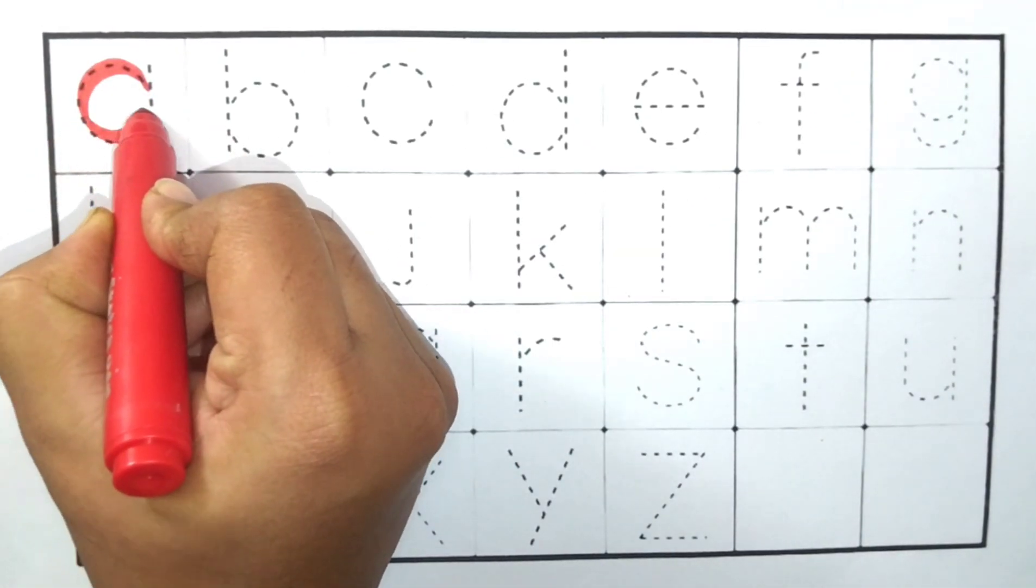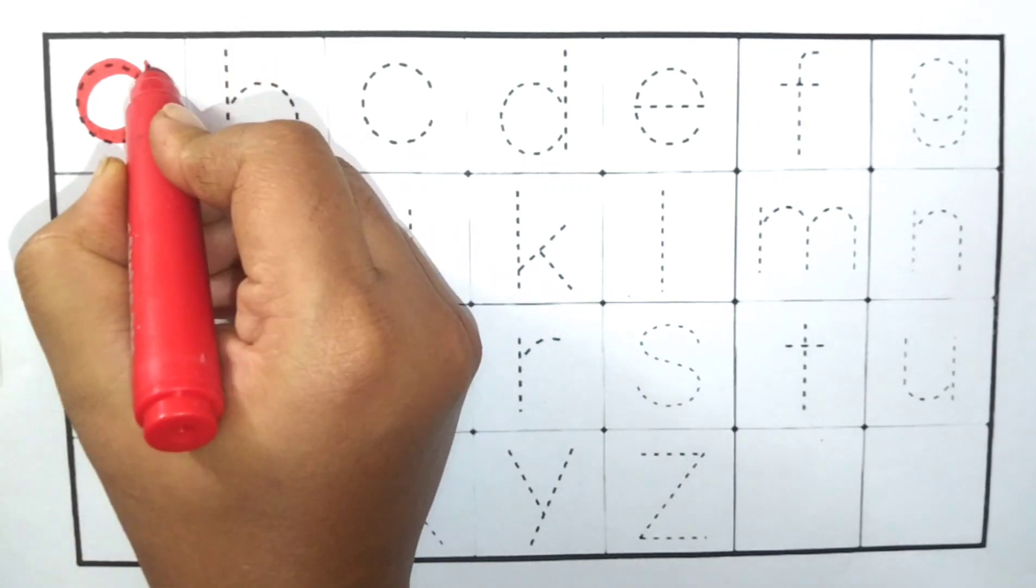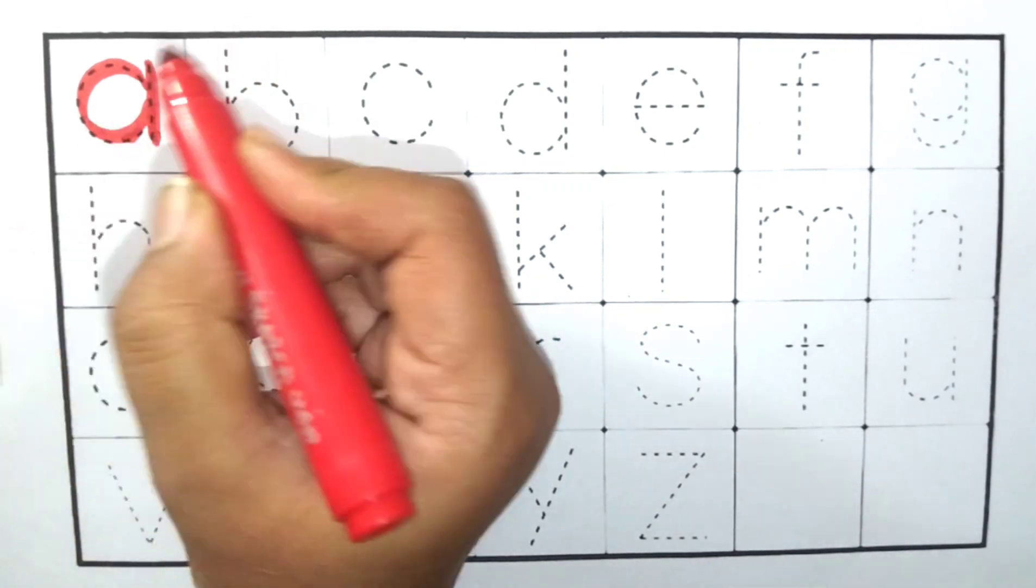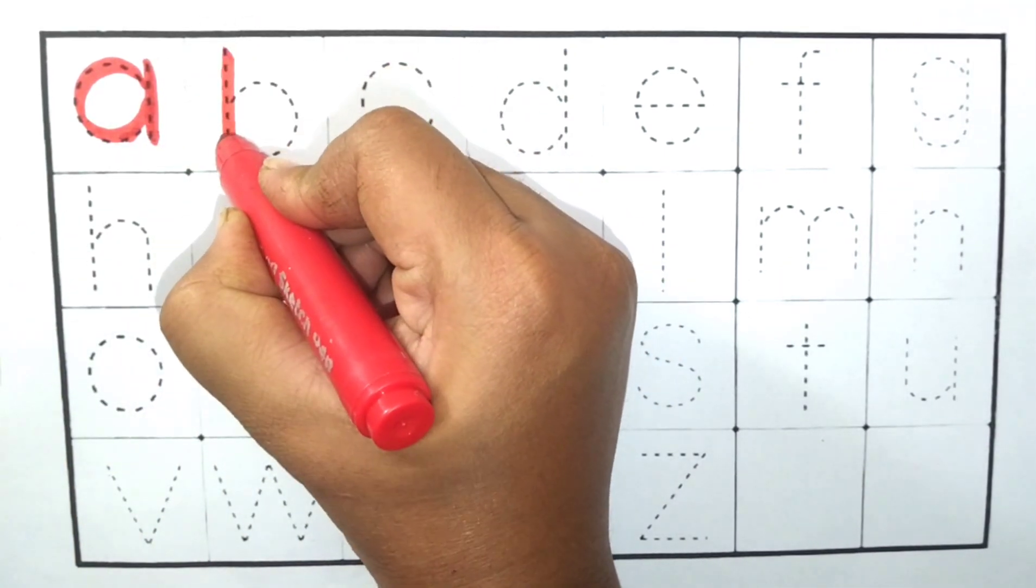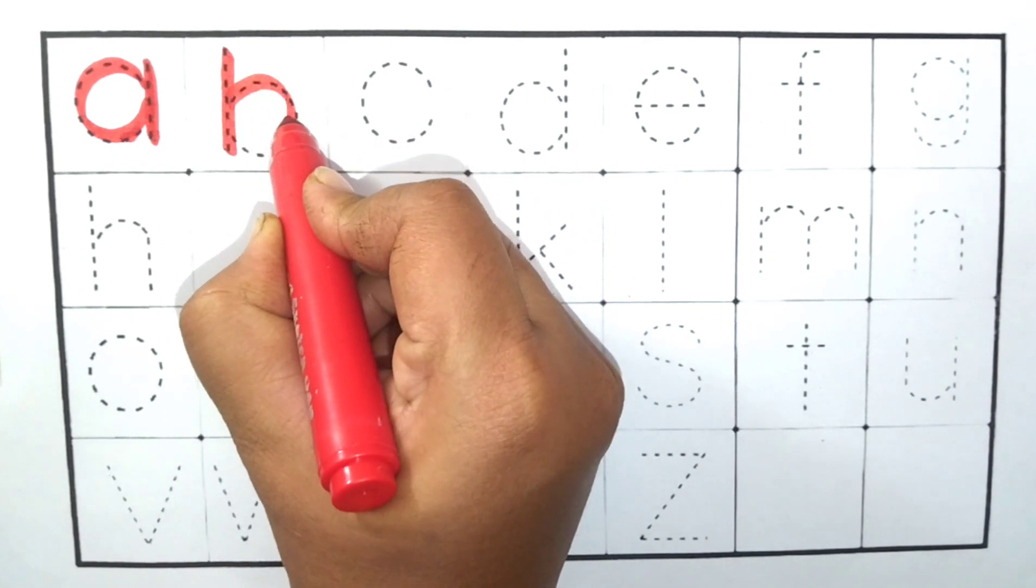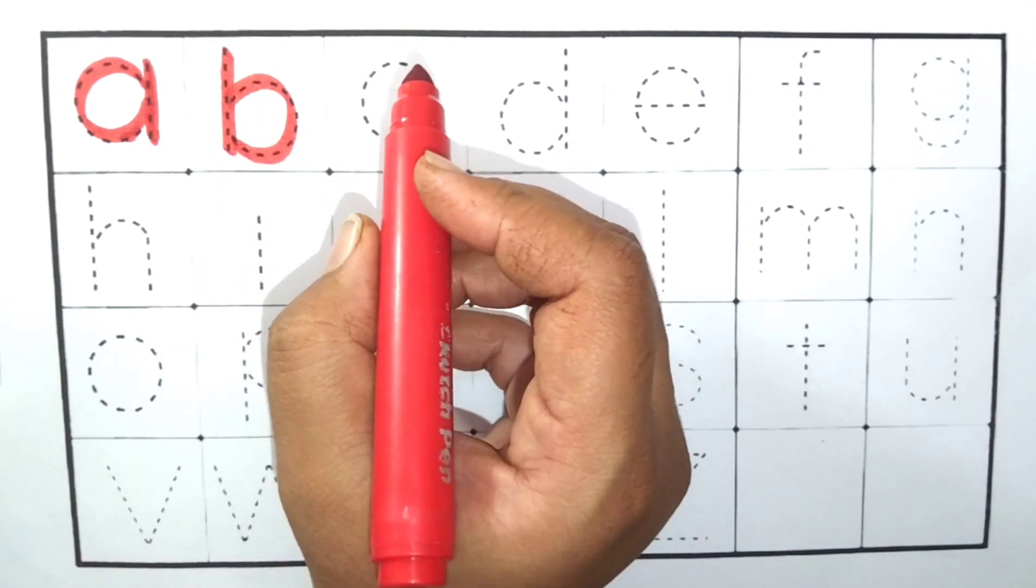A. A4. Apple. Apple means save. B. B4. Banana. Banana means kela.